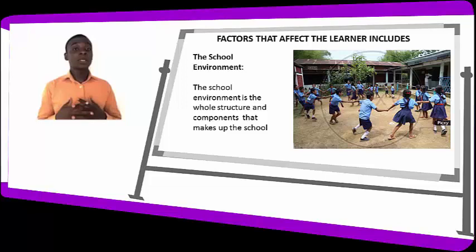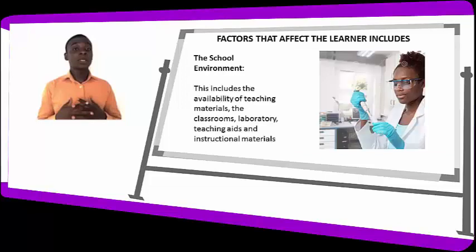When the class setting is not well structured for effective learning, learning is thwarted. The class setting affects the learner by providing a conducive atmosphere, and when it is not conducive, learners are adversely affected. Number three is the school environment — the whole structure and components that make up the school.